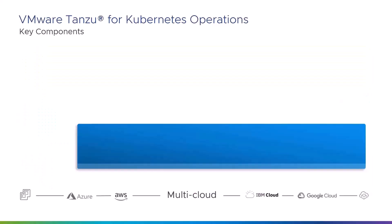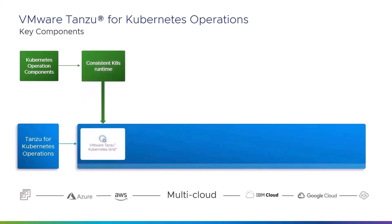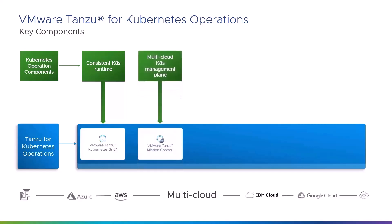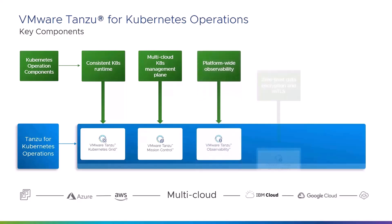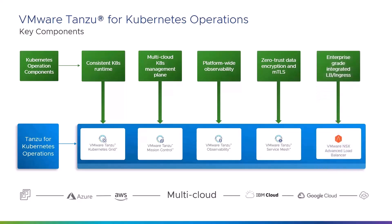Let's take a step back and take a quick look at Tanzu for Kubernetes Operations, TKO. TKO is the foundation for building a modern container infrastructure at scale across all your clouds. It provides a simplified, consistent approach to container deployment and management with tools, automation, and data-driven insights that boost developer productivity, secure applications and data, and optimize infrastructure performance.